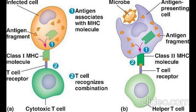MHC class 2 molecules are found on the surface of antigen-presenting cells (APCs), such as dendritic cells, macrophages, and B-cells, and present peptides derived from outside the cell to CD4+ T-cells. They play a role in recognizing and responding to extracellular pathogens such as bacteria and parasites.